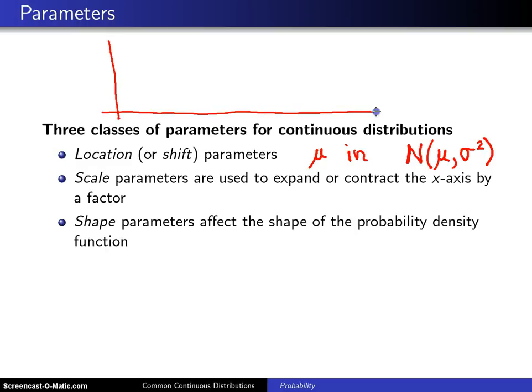If you want to see what a picture of that looks like, here is the axis x. And if you have one normal distribution that is right here, centered around one value, let's call it μ₁,